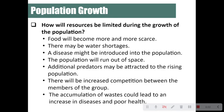Resources become limited as a population grows: food becomes scarce as there are more individuals to feed, and water shortages can occur for the same reason. A disease might be introduced — for example, COVID-19 caused a high death rate in certain areas and decreased population. A population could also run out of space; this was a situation in China, where a law was put in place allowing each family to have only one child.